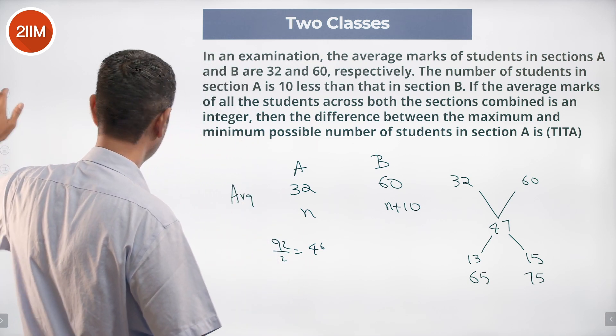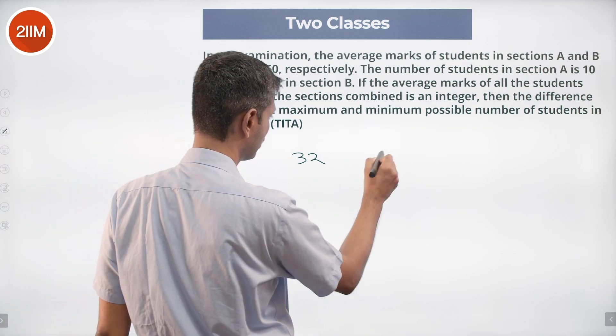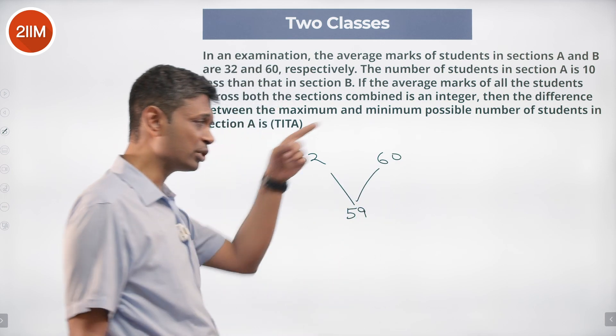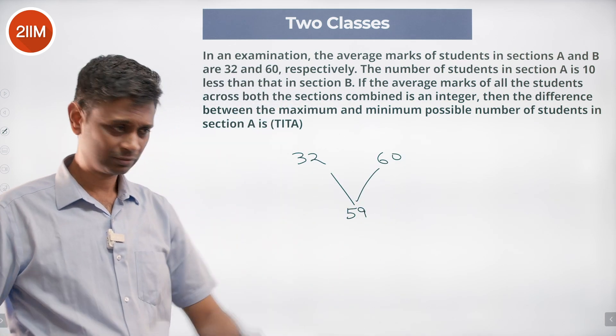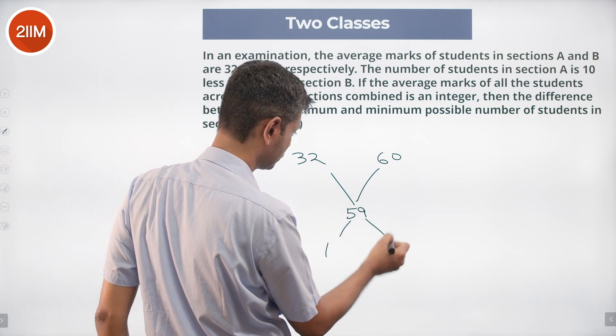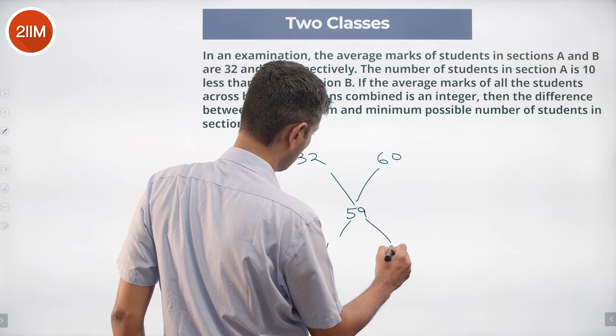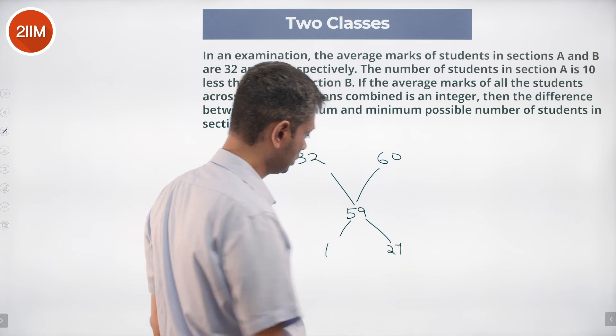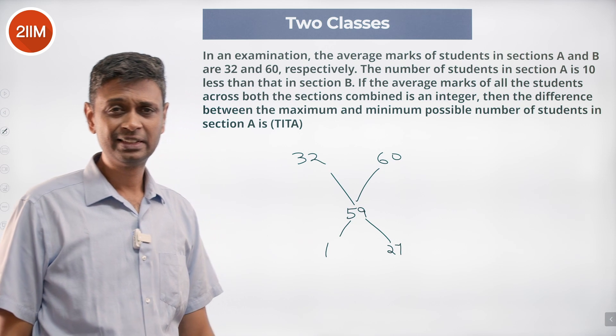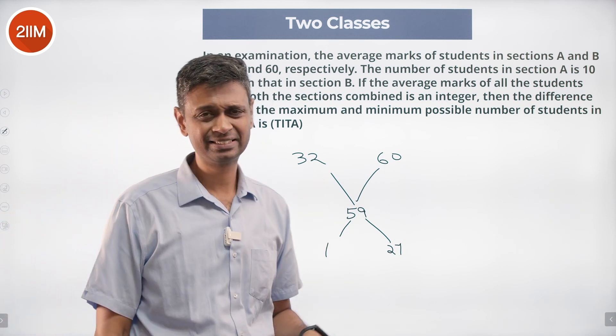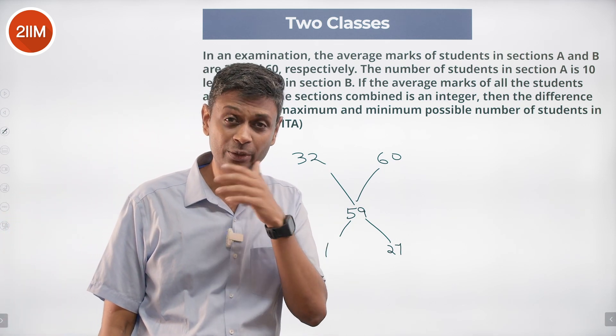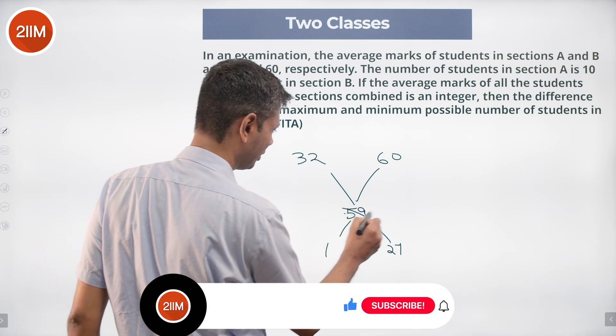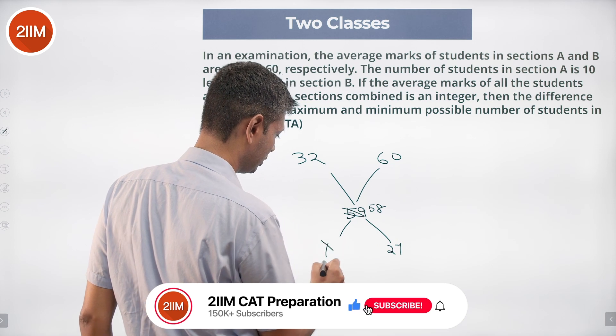Next what do we do? We say hey nice juicy we make it 32 and 60. Make the average in between is 59 because it can go as much as possible to that side. What's the ratio? This is 1 and this is 27. The ratio is 1 is to 27, the difference is 26. That cannot be it, 26X cannot be 10. So don't make it 59, make it 58, make it 2 and 26, difference is 24X that doesn't work.